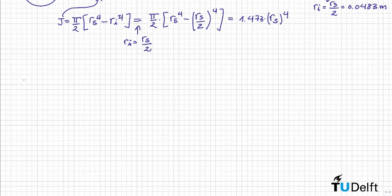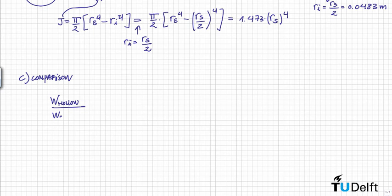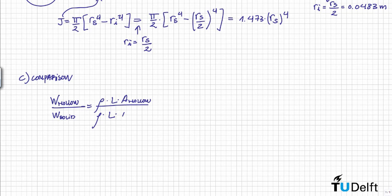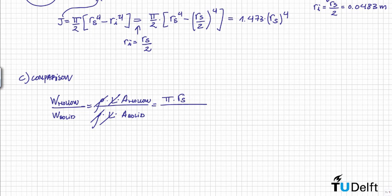Now we can do the comparison of both designs. We divide the weight of the hollow shaft by the weight of the solid one. This is equal to density times volume, where volume equals L times the cross-sectional area. Since we have the same density and the same length, this is basically a ratio of areas: π(Rs_hollow² − Ri²) divided by π(Rs_solid²).